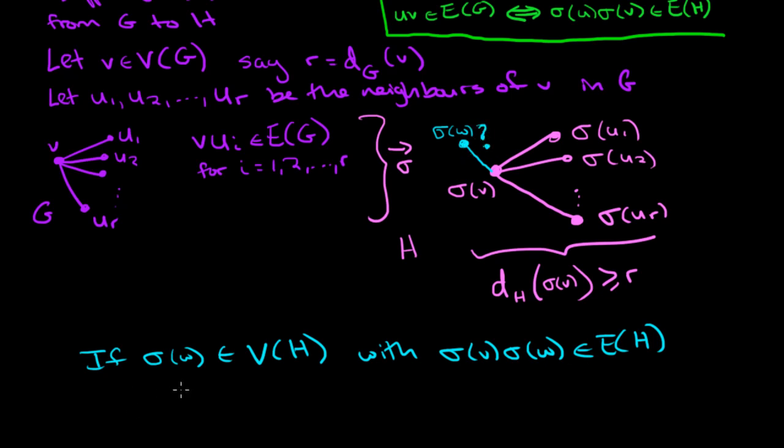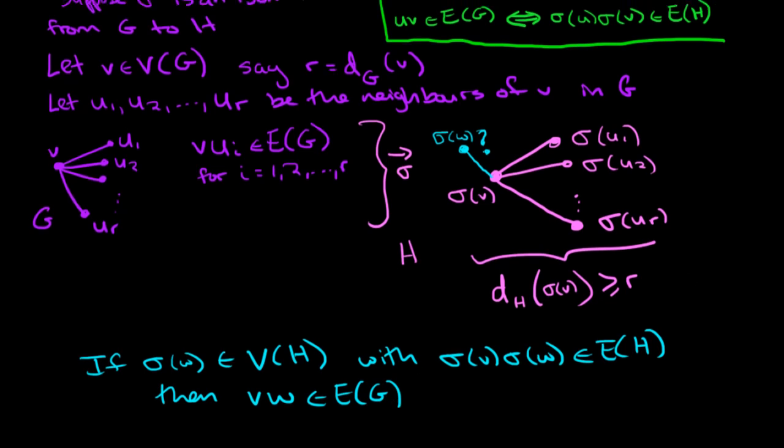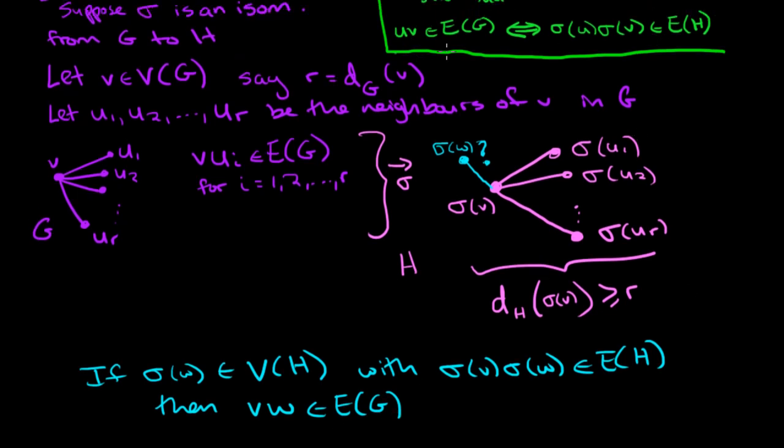If that does happen, then VW would have had to have been an edge in the graph G, because of the definition of sigma being an isomorphism. You would have had to have had another vertex out here which was incident with V. And this was not the case.